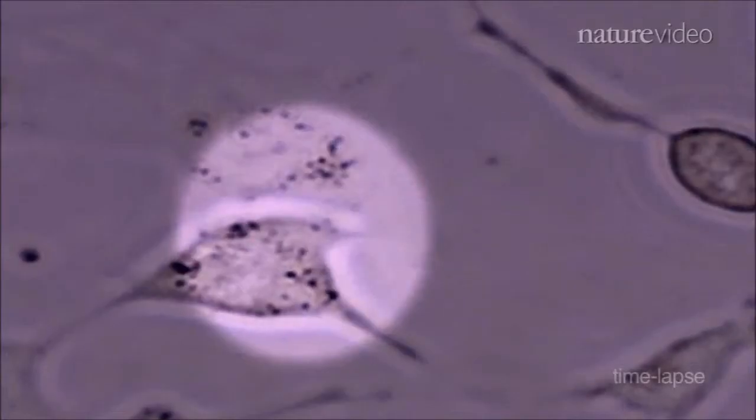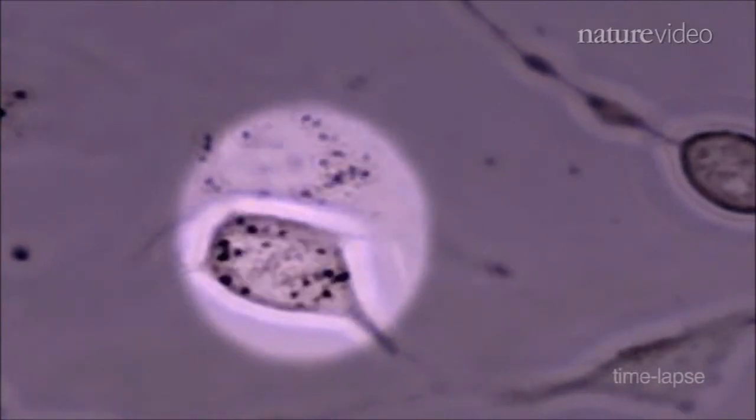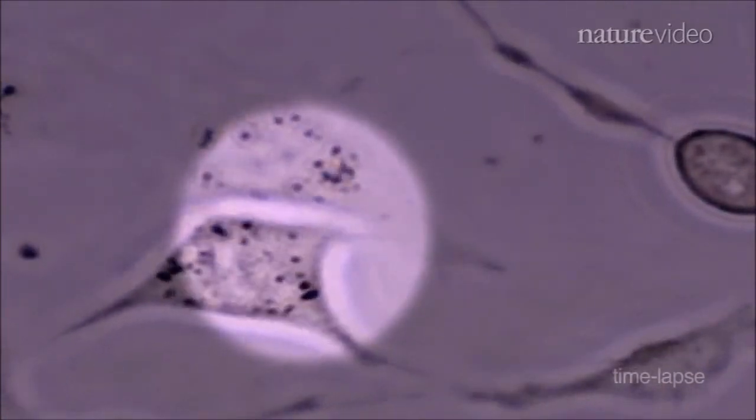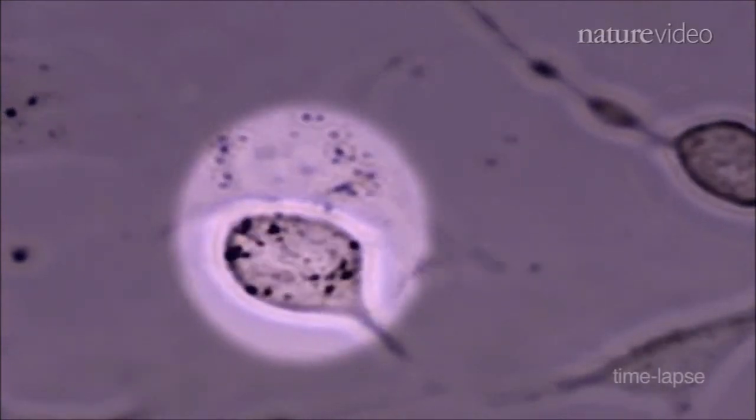And we knew that day, and the hairs are standing up on my arm, that indeed these cells existed in humans. I think probably among every other observation we've made, that has to be the most important. When the stem cells are placed into a dish containing normal ovary tissue, we can watch them mature, creating the first video footage of human eggs being born.